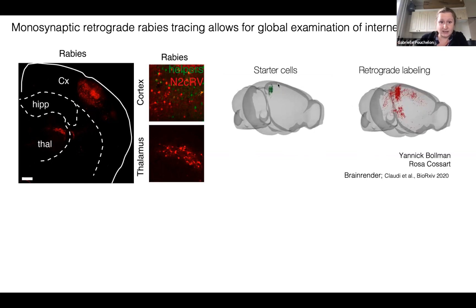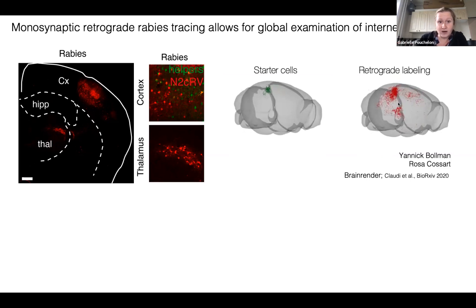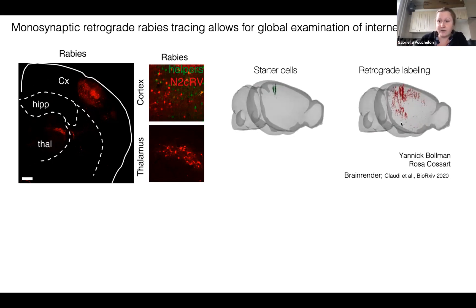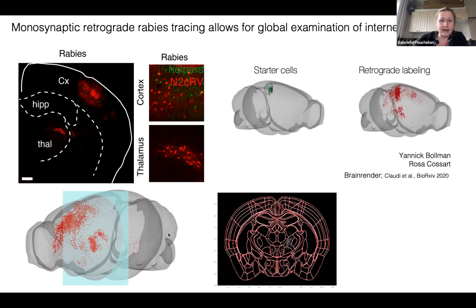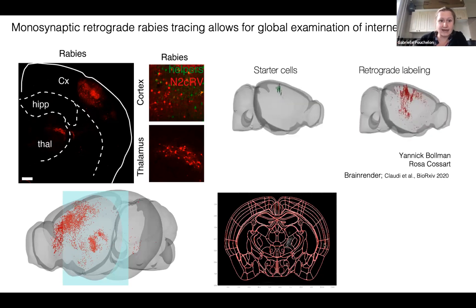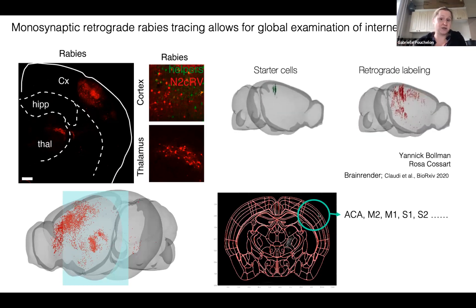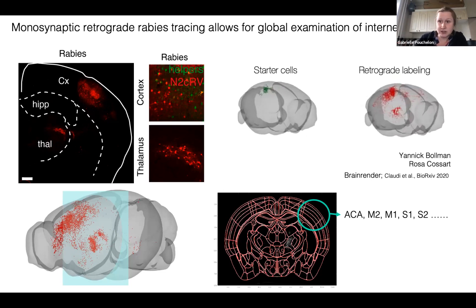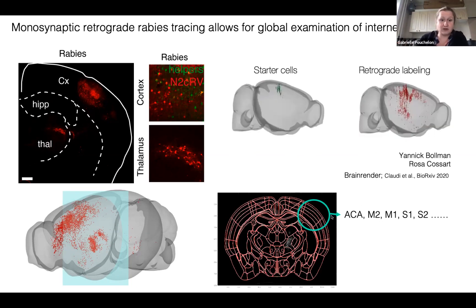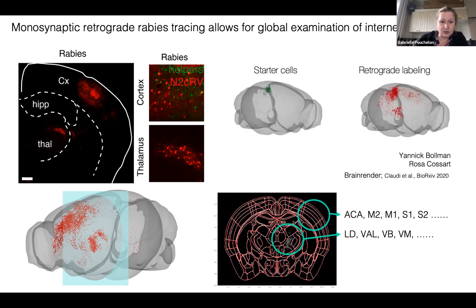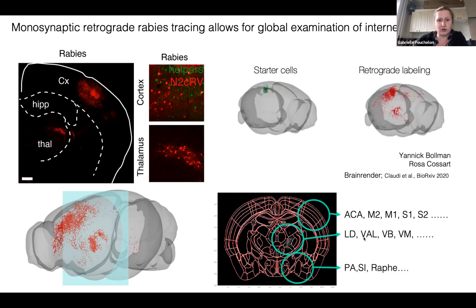We aligned sections to an atlas to define each population of neurons projecting to PV and SST. From this atlas we could quantify very distinct sub-regions within the cortex, such as the cingulate ACA, M2, and M1, as well as different nuclei from the thalamus projecting to PV and SST, and other subcortical regions.